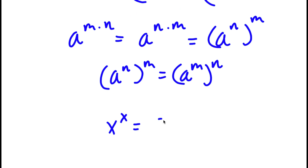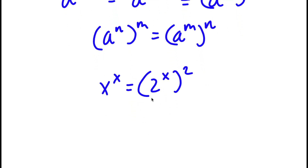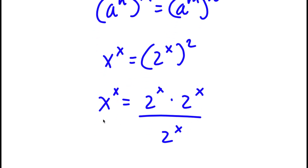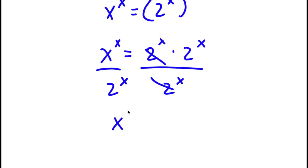So now I have x to the power of x equals 2 to the power of x to the power of 2. I'm going to rewrite 2 to the power of x squared as 2 to the power of x times 2 to the power of x. Now on both sides I'm going to divide by 2 to the power of x — these two cancel out, and I'm left with x to the power of x over 2 to the power of x is equal to 2 to the power of x.